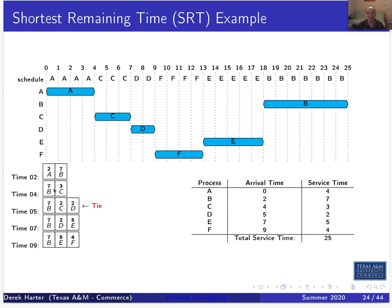Looking at SRT: A arrives at time zero and is scheduled. At time two, B arrives so we preempt — A has a remaining service time of two out of its original four, and B has a remaining time of seven. We select based on remaining service time — hence the name Shortest Remaining Time — so A continues. At time four, C arrives, but A has finished, and C has the shortest remaining time so it's scheduled.